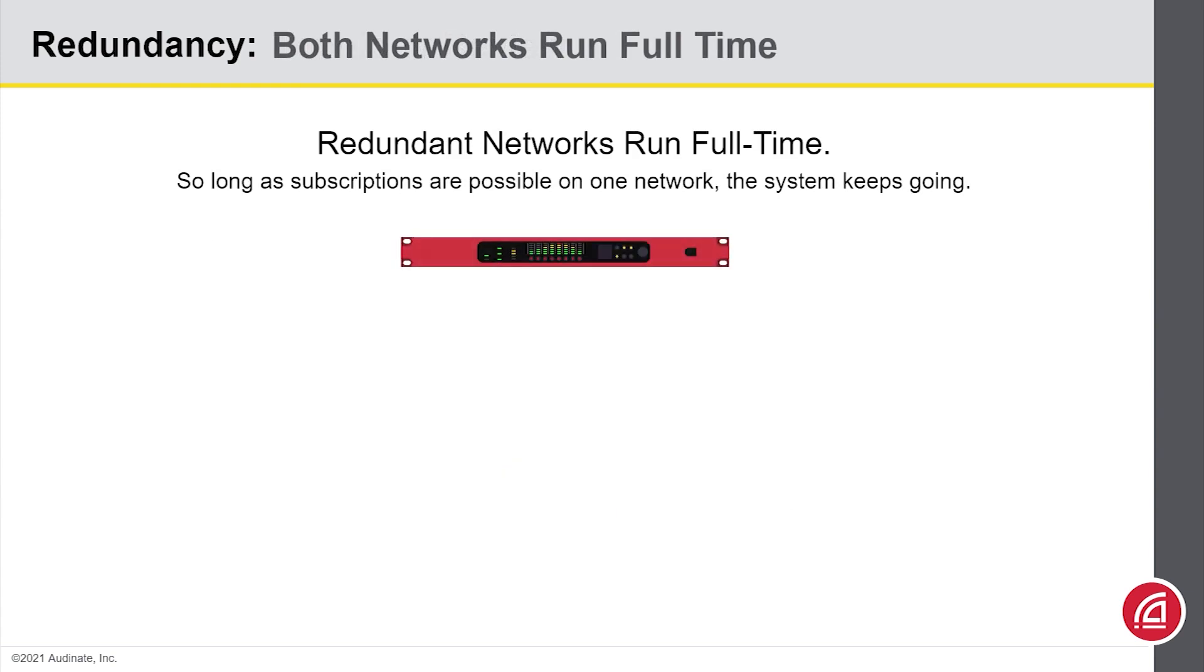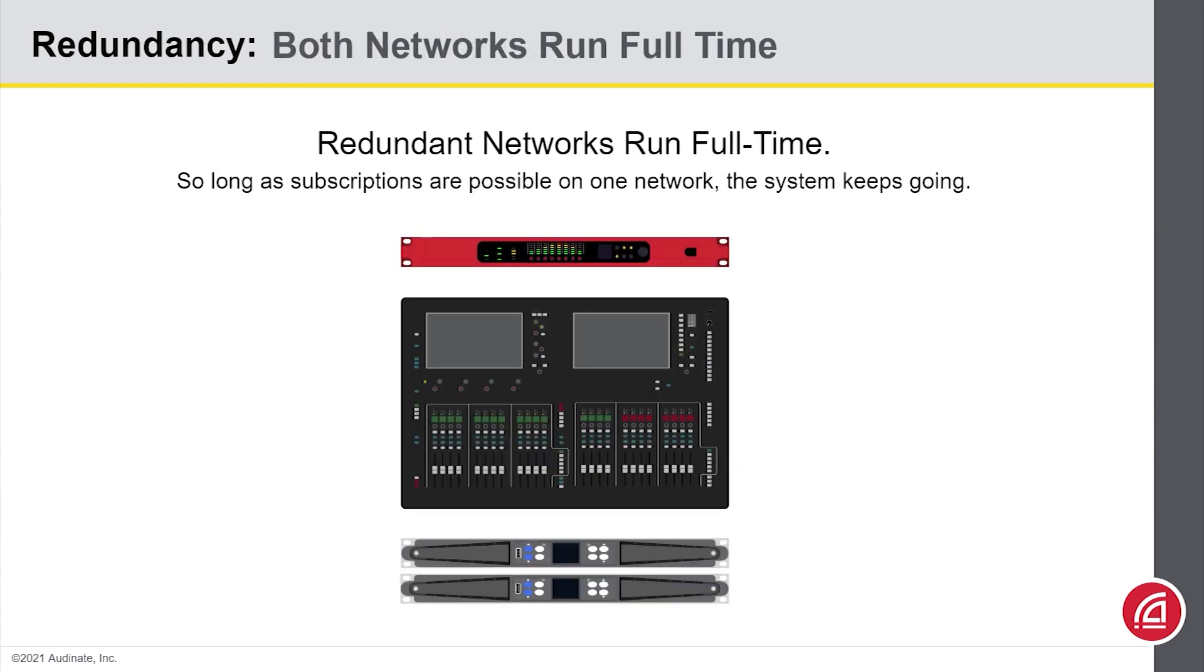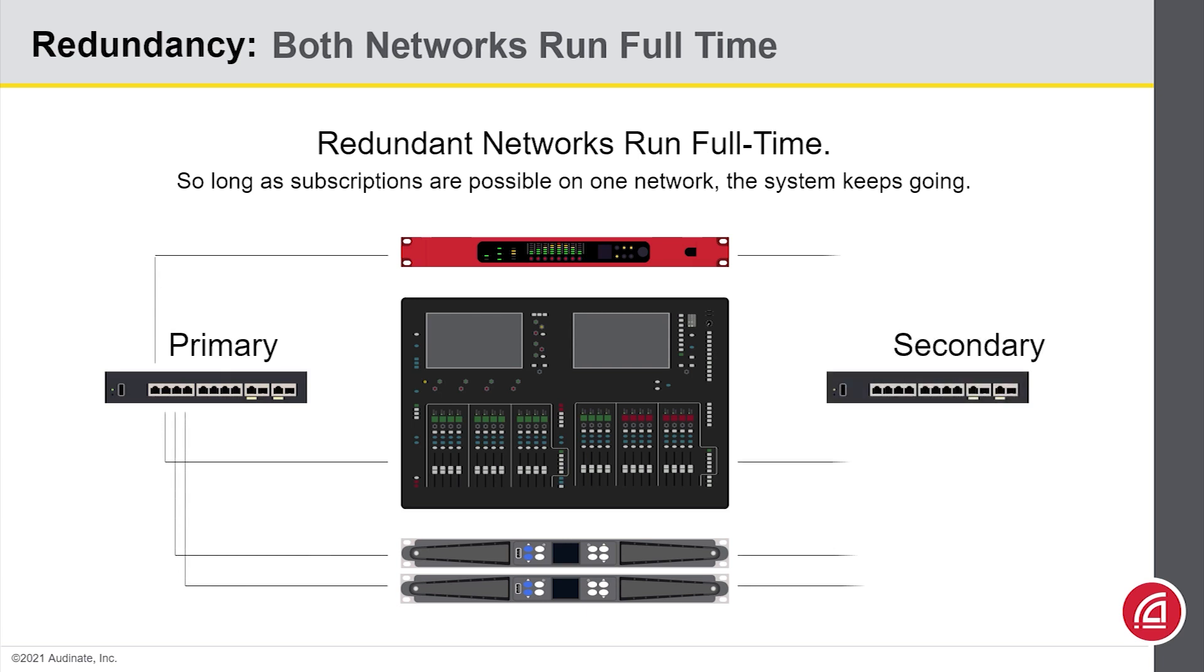The idea behind the redundant network is that we can run two independent networks. The Dante device's primary ports can go to one network, and its secondary ports can go to the separate network. Let's suppose someone drags some scenery across a primary cable and cuts it. The secondary network can still get the signal from the mic preamp to the mixer.